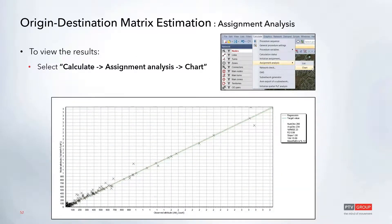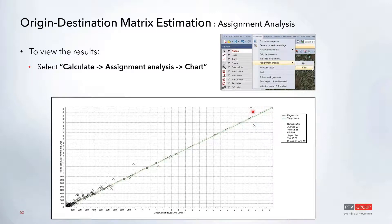To view these results, go to the calculate menu and select assignment analysis and chart. This brings up a chart at the bottom where the y-axis shows volume values and the x-axis shows the count UDA values. This is a great way to quickly check after each iteration of ODME to see how your assignment looks. You can spot outliers, and on the right you can see fitness statistics such as the R-squared value and the percent root mean square error.